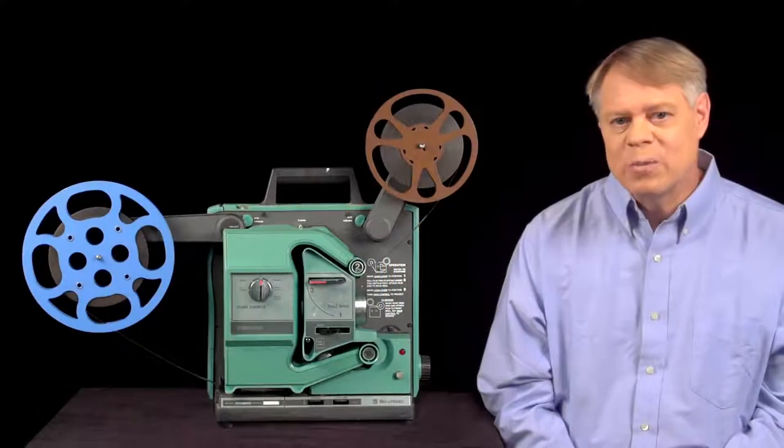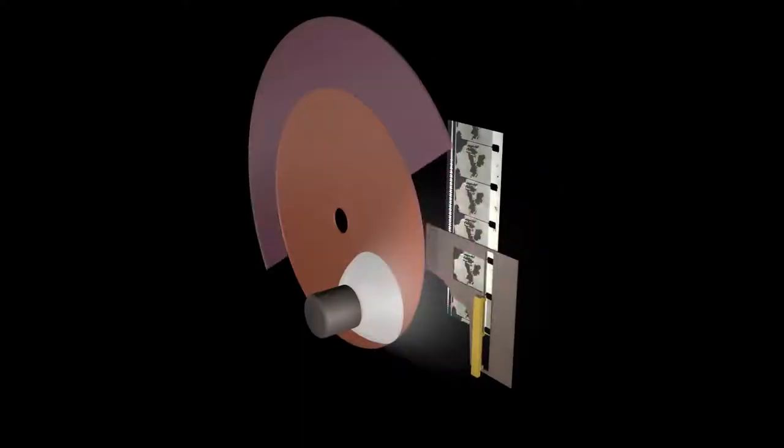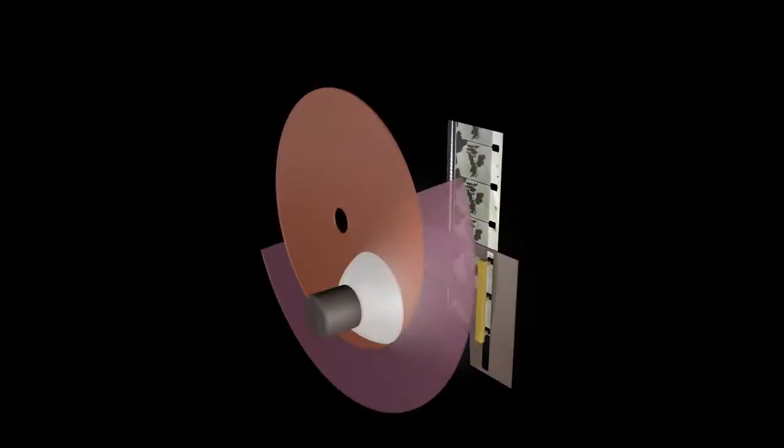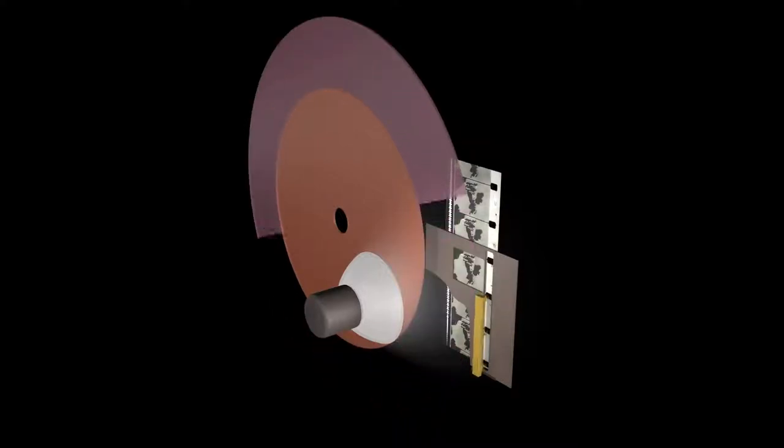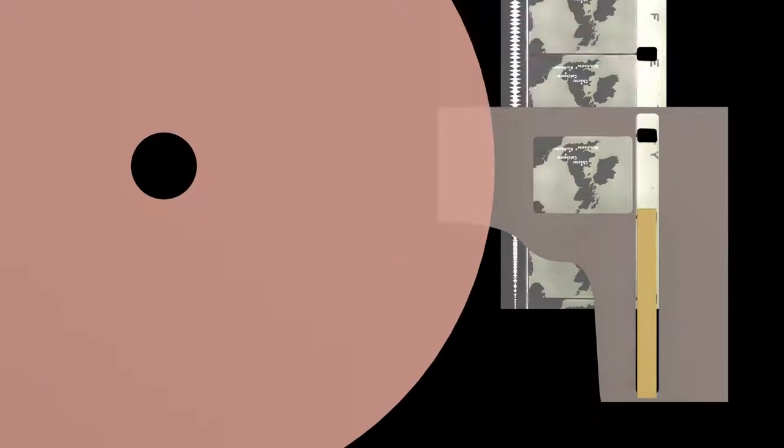The shuttle transports the film so that it's stationary most of the time and quickly advances to the next frame. Though it is rapid, the film movement will still cause blur in the projected image. The blur is eliminated by a shutter. The shutter is a disc with a blade that protrudes from half the circumference. The other half is open. The shutter rotates once every frame and is synced so that the shutter blade blocks light from the lamp while the shuttle is advancing the film. This prevents the projection of film motion on the screen.